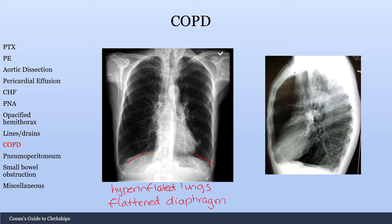The final finding here is this increased anterior to posterior thoracic ratio, which is called barrel chest. This is another finding of COPD.